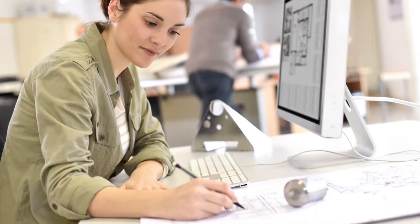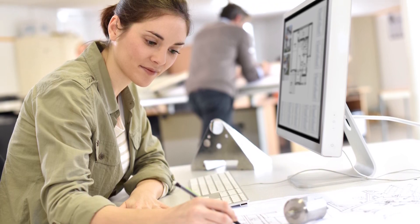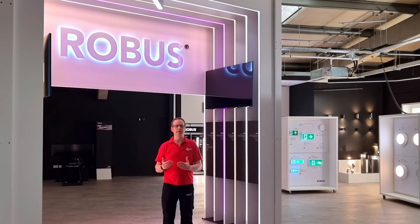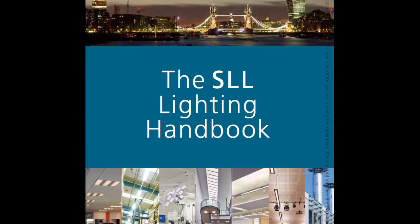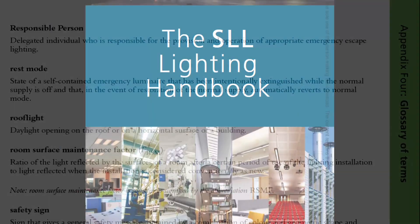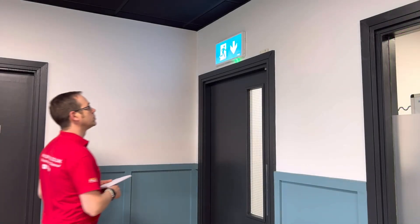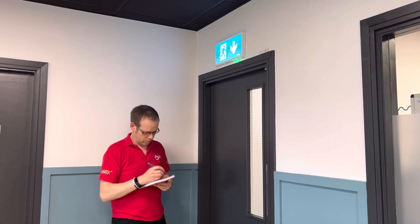We've mentioned the term 'responsible person' a couple of times in this video, but what does it actually mean? In the context of fire safety and emergency lighting, we can find a definition in the Lighting Handbook published by the Society of Light and Lighting. In the glossary it is defined as a delegated individual who is responsible for the provision and operation of appropriate emergency escape lighting — someone connected to the management of the building, assigned to make sure that the emergency lighting is doing its job.